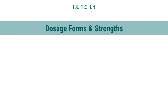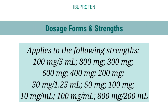Dosage forms and strengths — applies to the following strengths: 100 mg/5 mL, 800 mg, 300 mg, 600 mg, 400 mg, 200 mg, 50 mg/1.25 mL, 50 mg, 100 mg, 10 mg per mL, and 100 mg per mL.